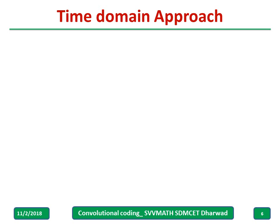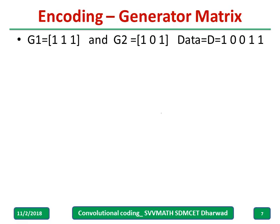Now let us consider the time domain approach first. G1 is given as 111, G2 is given as 101, and data is given as 10011. To write the generator matrix, write the first bit of G1 followed by the first bit of G2, then the second bit of G1 followed by the second bit of G2, and so on.